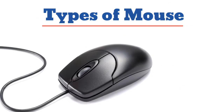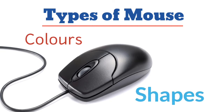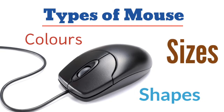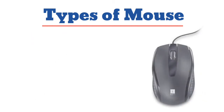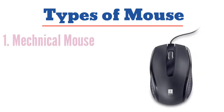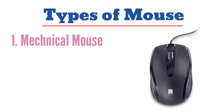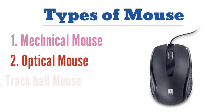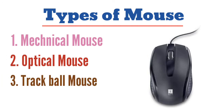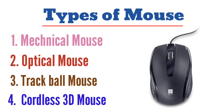Types of Mouse. The mouse can be of different colors, shapes, and size. Some of these are: Mechanical Mouse, Optical Mouse, Trackball Mouse, and Cordless 3D Mouse.